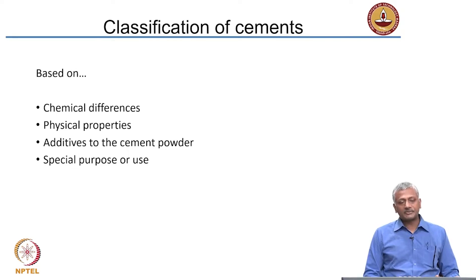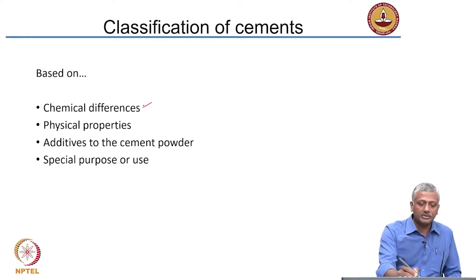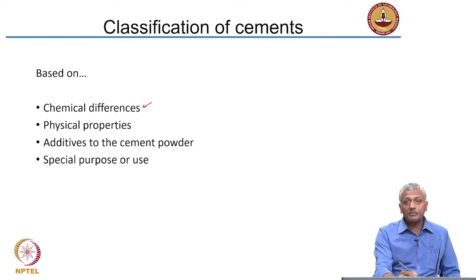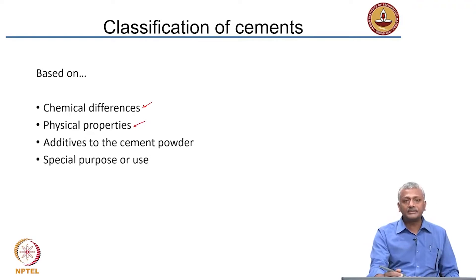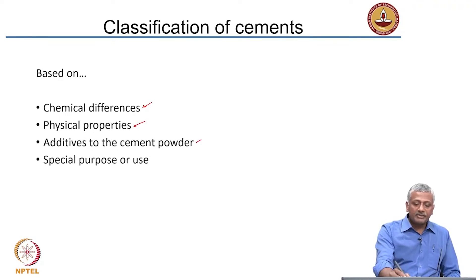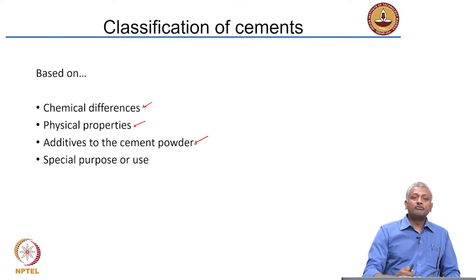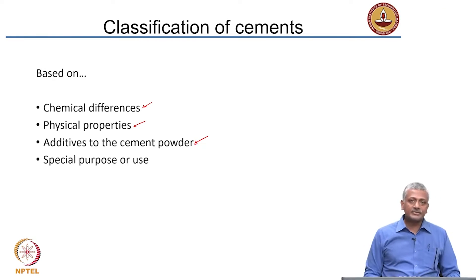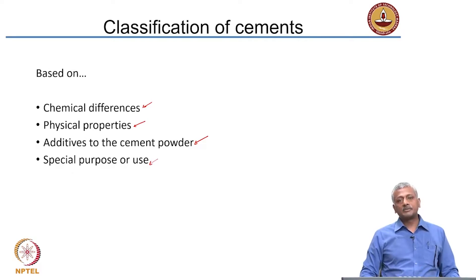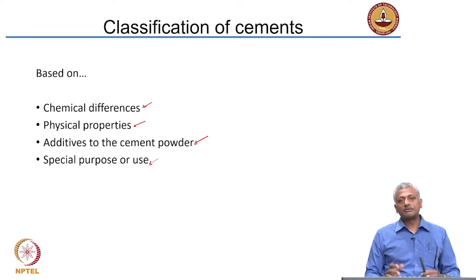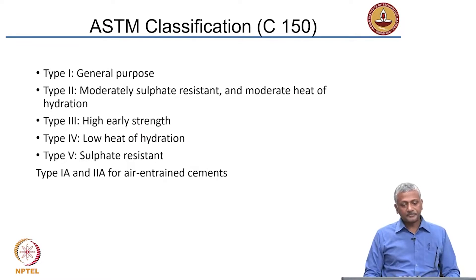Cement can be classified based on differences in chemical composition, differences in physical properties — for example, some cements are much finer than others — differences in terms of putting extra additives into the cement powder, or sometimes you may have very special purpose cements which are not used for general purpose construction. Let me give you examples of different types of cements here.